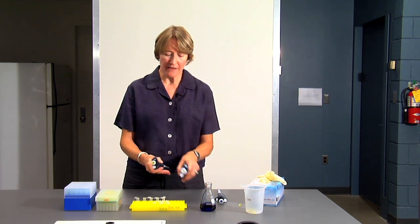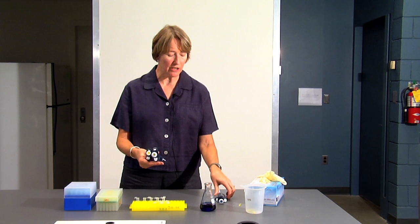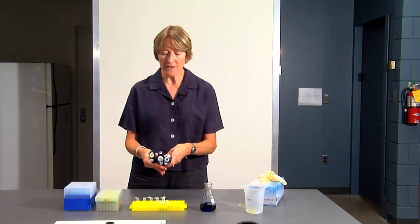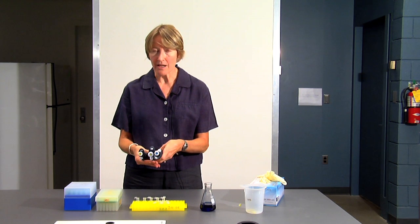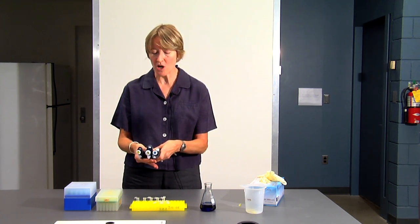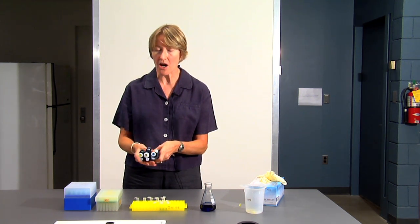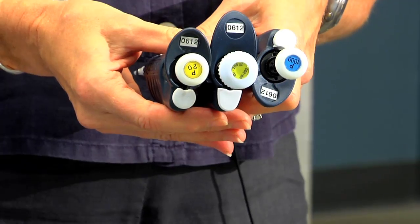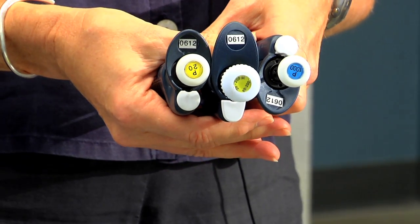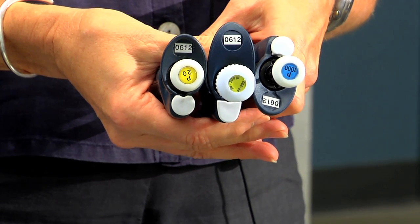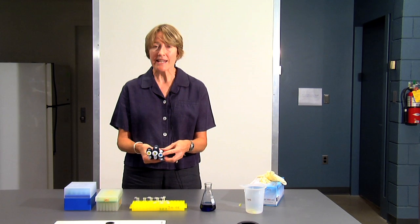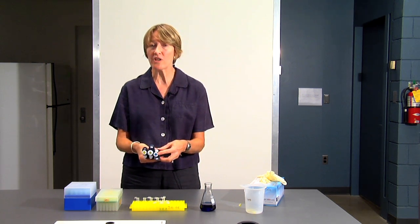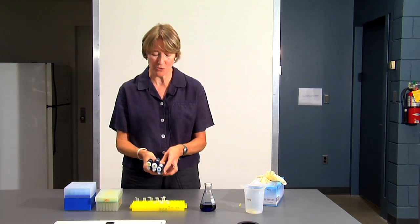I want you to notice that the pipettes are color coded, and that on the top of the plunger, you'll see either a yellow dot on the P20 and the P200, you have a yellow dot on the plunger. On the P1000, you have a blue dot. This color coding tells you which size and which color pipette tips to use.